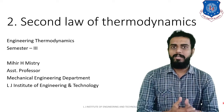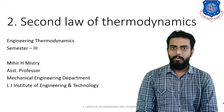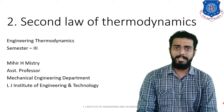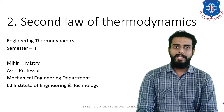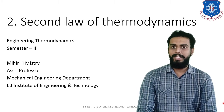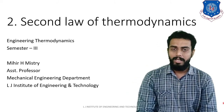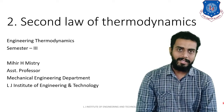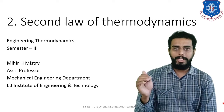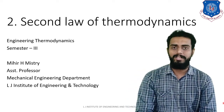Let us recapitulate the Kelvin-Planck and Clausius Statements. The Clausius Statement of the Second Law of Thermodynamics is simple: it is impossible for a cyclic device to transfer heat from a low temperature body to a high temperature body without any work input. That means you must have work input if you want to transfer heat from low to high temperature.